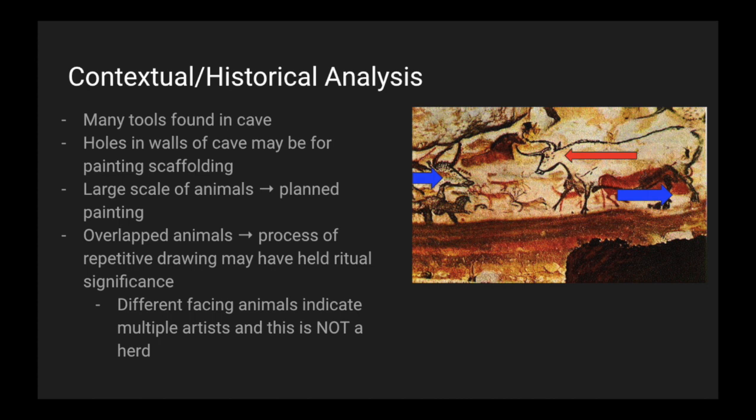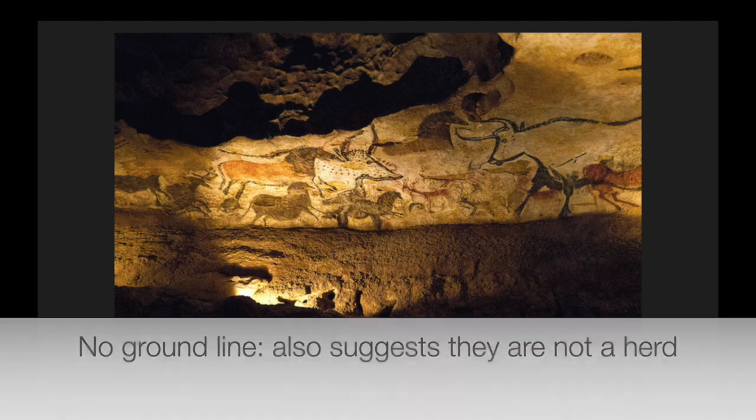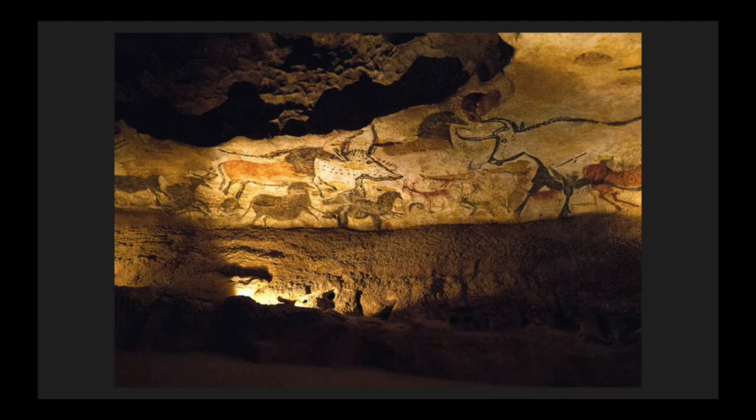You can see the blue arrows are pointing to the right — those animals are pointing to the right — and the red arrow is pointing to the left, meaning that animal is facing the opposite direction. The fact that there is no ground line, that all the animals are not standing on the same plane, could also indicate that they are not of the same herd.